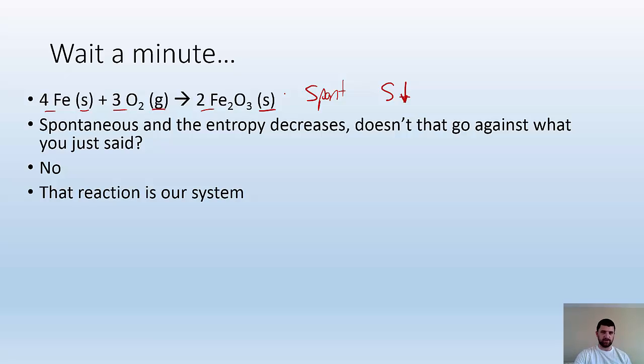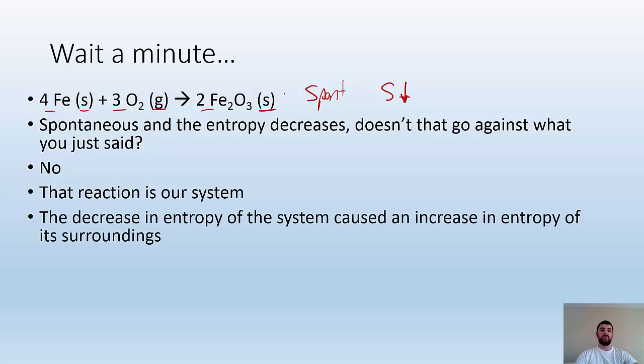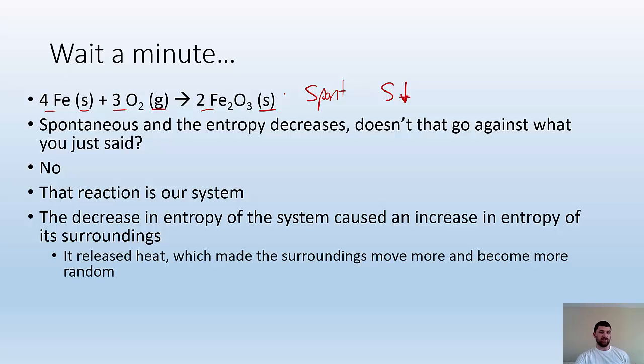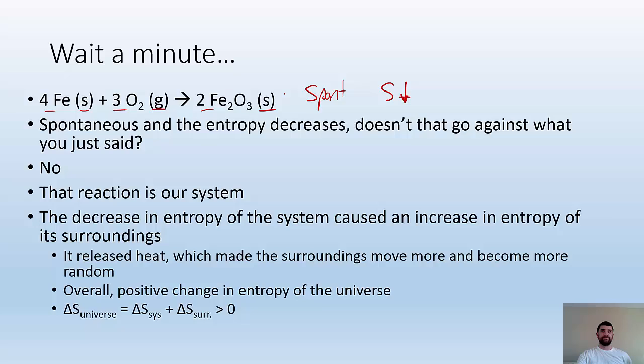But why not? Because the reaction is just our system. We're just looking at just the system. If we're talking about the entropy of the universe, we also have to look at the surroundings. The decrease in entropy of the system causes an increase in entropy of its surroundings. How did it do that? Well, this reaction is exothermic. It releases heat. So that heat is going to the surroundings and the surroundings can now move around more, which is going to make it more chaotic. So releasing the heat made the surroundings have a higher entropy.